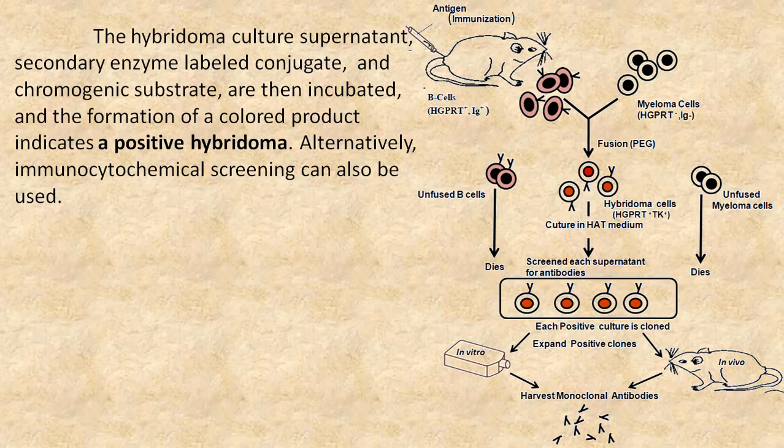The hybridoma culture supernatant, secondary enzyme-labeled conjugate, and chromogenic substrate are then incubated, and the formation of a colored product indicates a positive hybridoma. Alternatively, immunocytochemical screening can also be used.